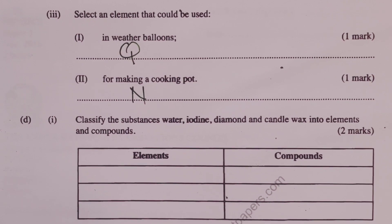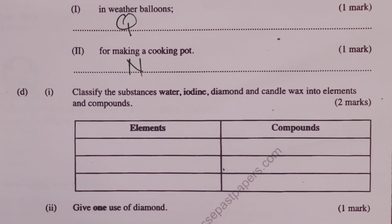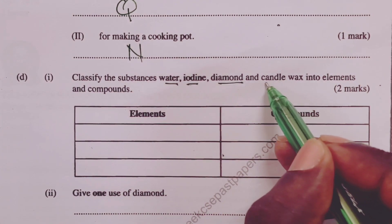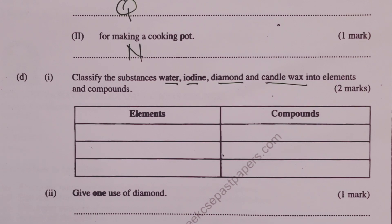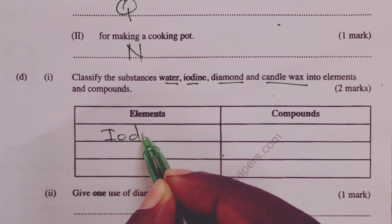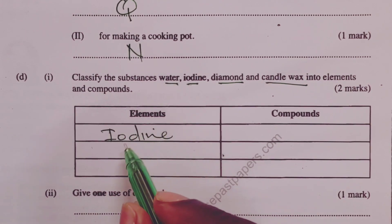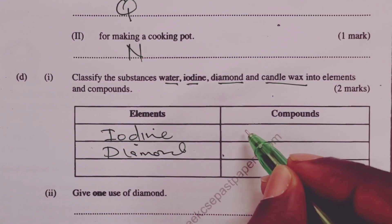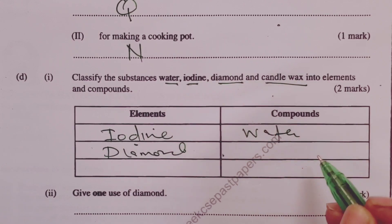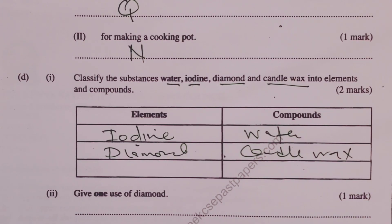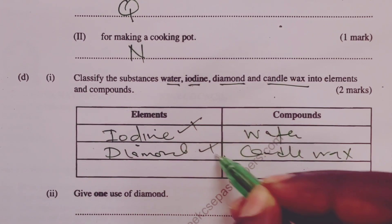Part D, roman numeral 1 asks to classify water, iodine, diamond, and candle wax as either elements or compounds. Elements: iodine and diamond (which is carbon). Compounds: water and candle wax (a hydrocarbon). That is two marks, with half a mark for each correct classification.